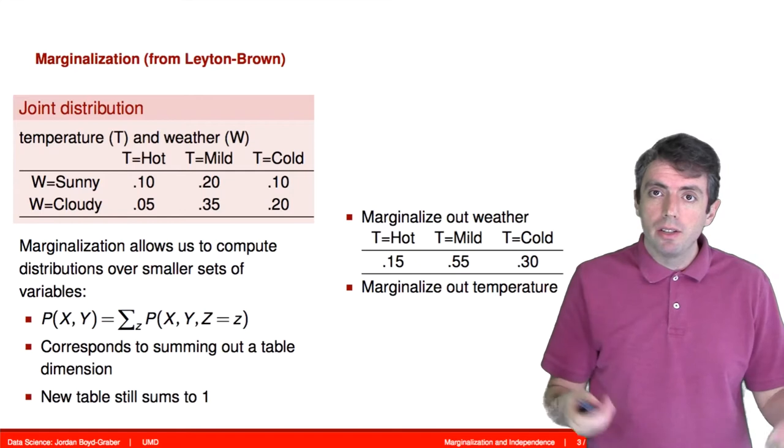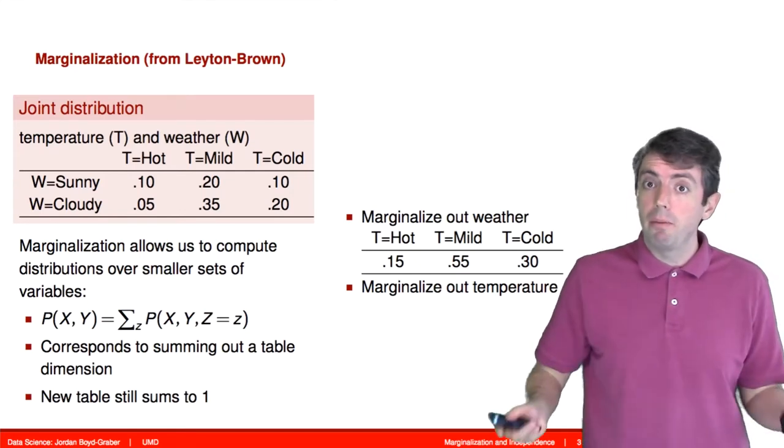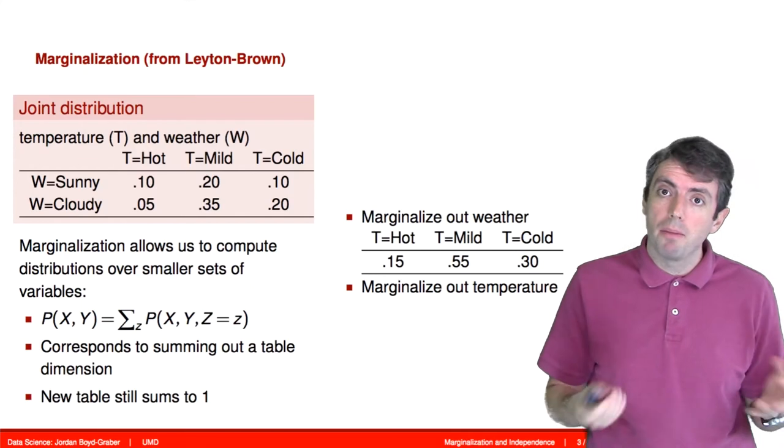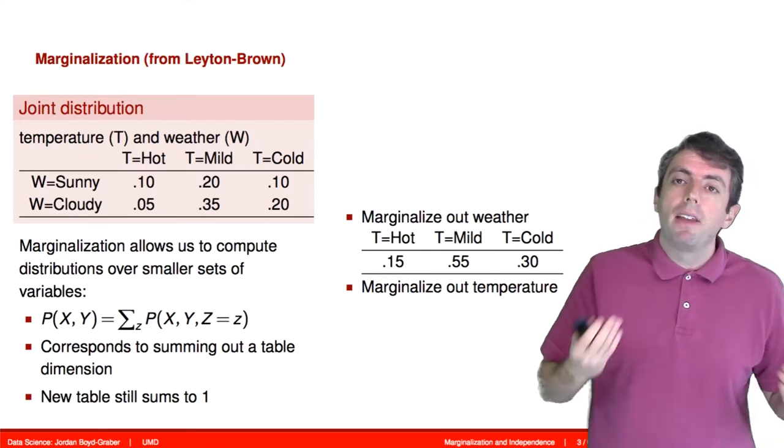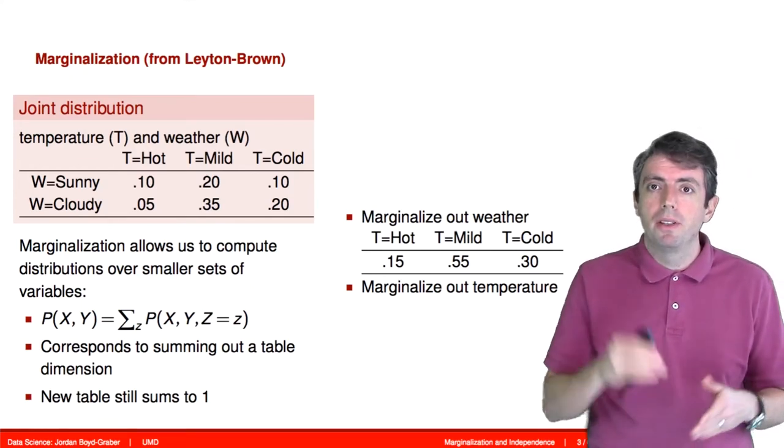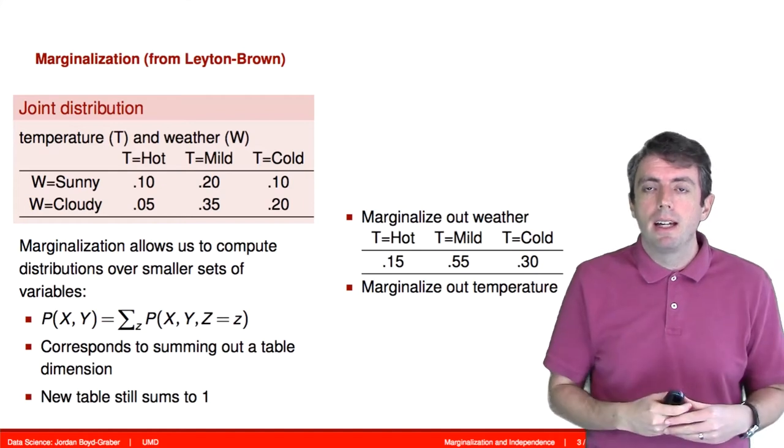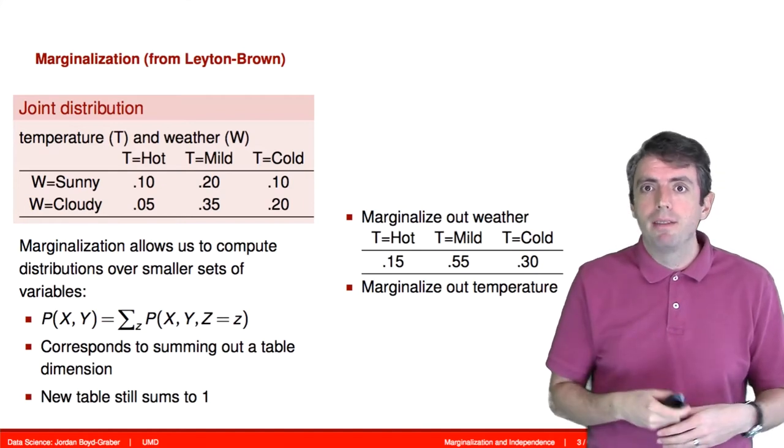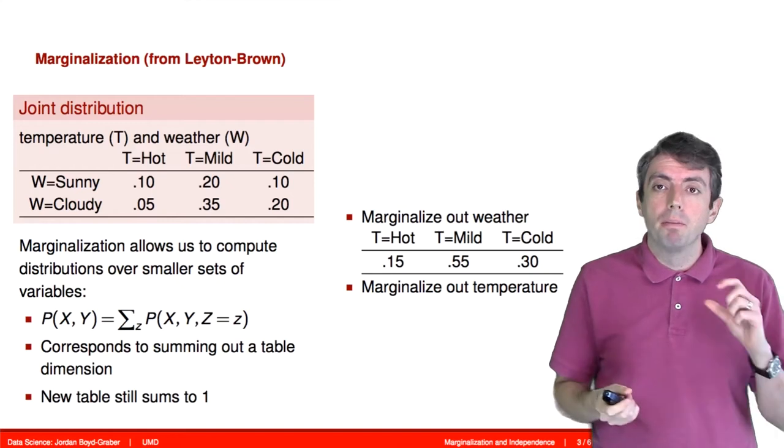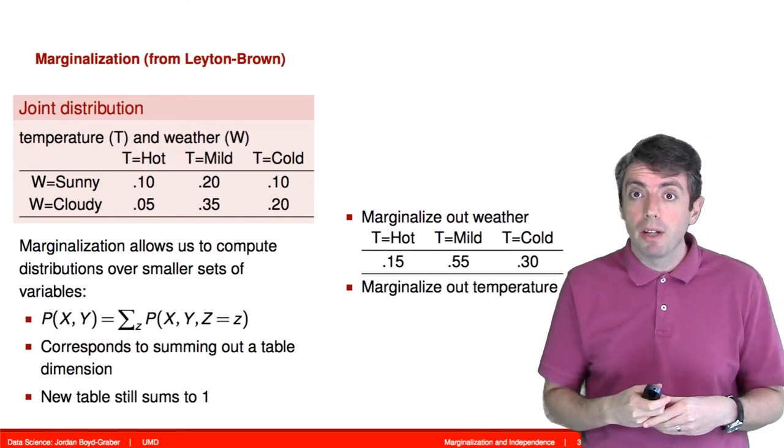We do the same thing for mild and cold weather. Now the original 2x3 table sums to 1 because it was a probability distribution, a joint probability distribution. And the new table that we produce, which is a 3x1 table, also sums to 1. It still is a probability distribution, but we've removed the random variable that we don't care about.